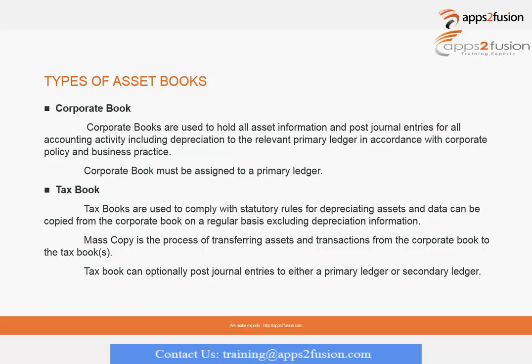An asset book is basically how we want to restrict the financial information about an asset. Each asset can have different financial information and depreciation rules in each book. We can have an unlimited number of asset books, and each book with its own depreciation rules, accounts, calendars, and everything else can be attached together.